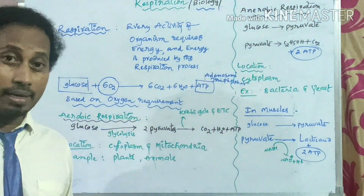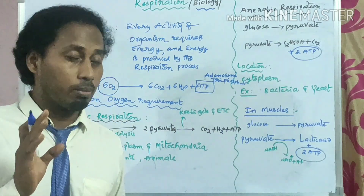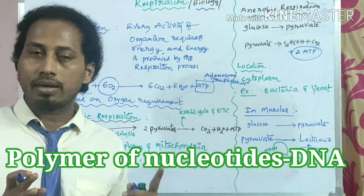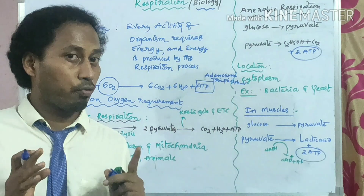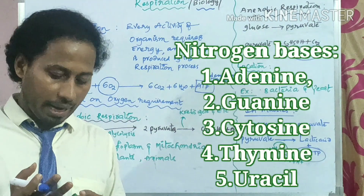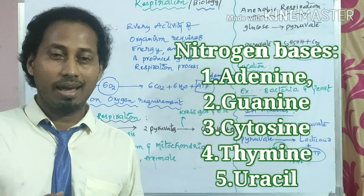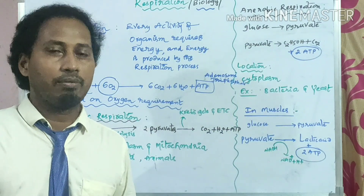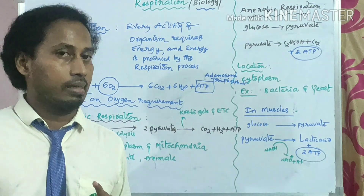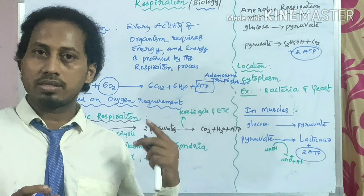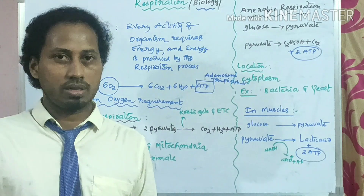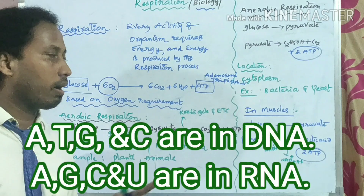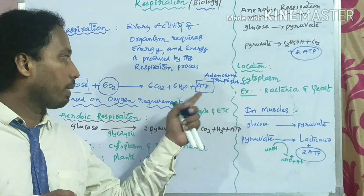Adenosine triphosphate: adenine is a nitrogen base. You must have heard about DNA — DNA is made of nucleotides. There are four nitrogen bases you must have heard about: adenine, guanine, cytosine, and thymine. When we talk about DNA and RNA, we differentiate with two nitrogen bases — thymine and uracil. Adenine joins with ribose sugar and phosphate to together form ATP.